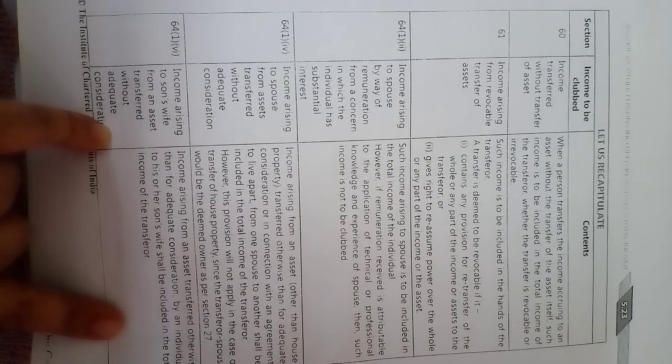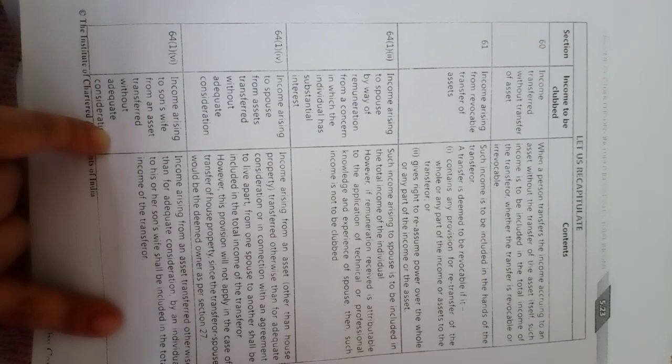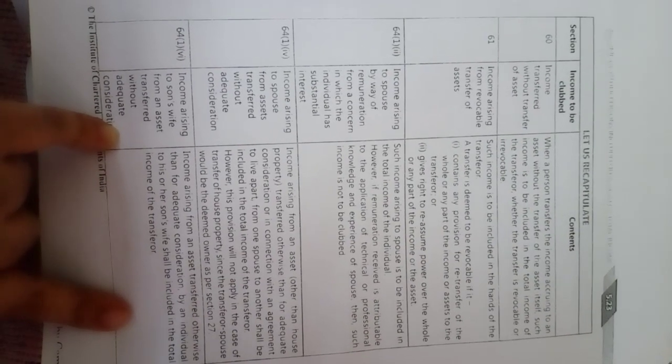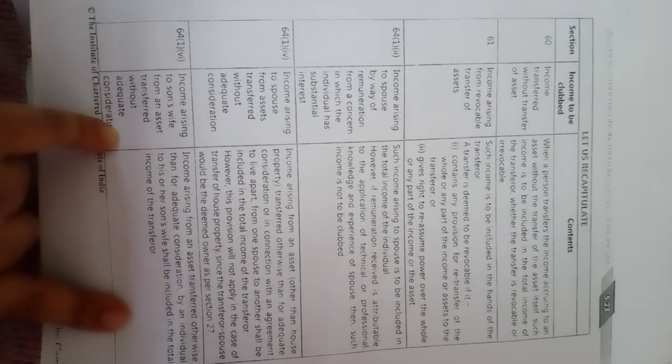According to Section 64(1), if the income arising to the spouse is by way of remuneration from a concern in which the individual has substantial interest — substantial interest means voting power of 20% or more — then that income is clubbed. For example, if a husband is working in a company where the wife holds 20% or more voting power, the husband's income will be considered as the income of the wife.